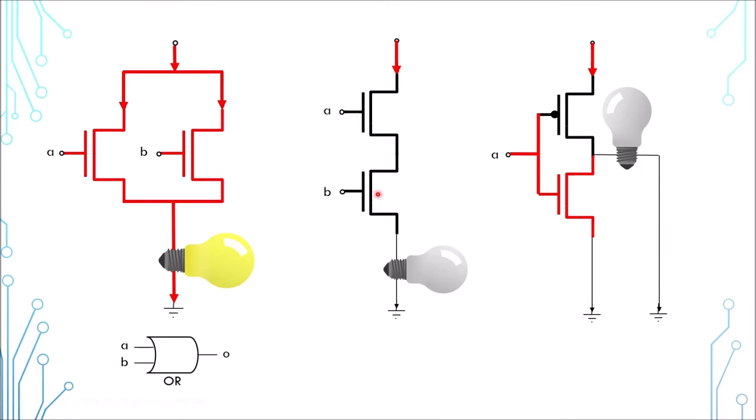At the middle arrangement, the transistors are arranged in a serial manner. Both transistor A and transistor B need to be turned on for the electric current to pass through. This forms a logical AND gate.